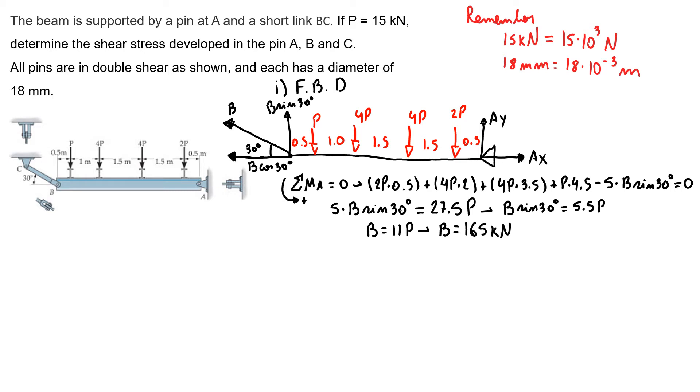So I can find my A reaction first doing the sum of the forces in x-axis equals 0. So I have Ax minus B cosine of 30 equals 0. So my Ax equals 165 times cosine of 30.